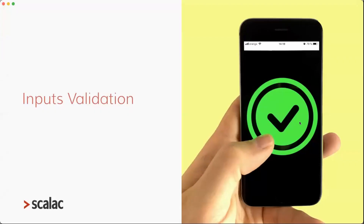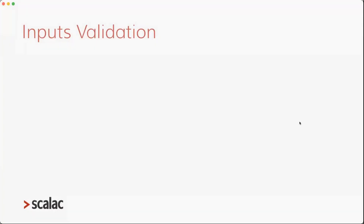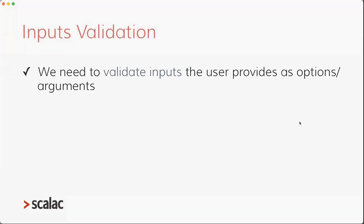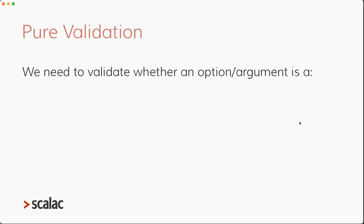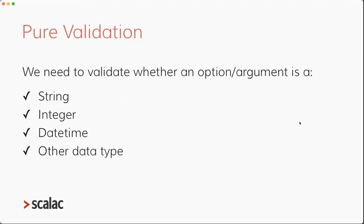That's everything we need to think about for command line parameters. Besides all of that, we also need to validate user inputs — we don't want users to introduce invalid data to our application. There are two types of validation: pure validation and impure validation. Pure validation means verifying whether an option or argument the user is providing is, for example, a string, an integer, a datetime, or another data type.